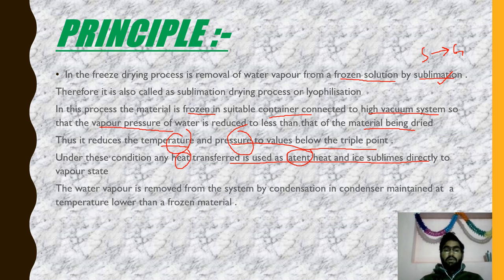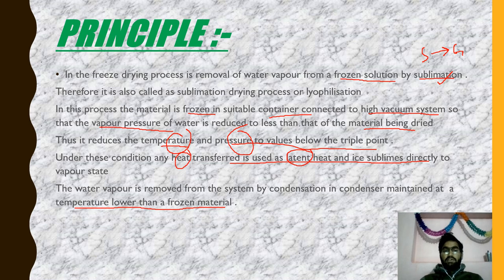Water vapor is removed from the system by condensation in a condenser maintained at a temperature lower than that of the frozen material. The water vapor that goes into the vapor phase is then condensed with the help of the condenser.